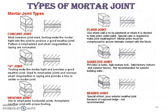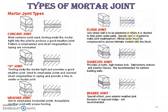Next, we go through the types of mortar joints. We have different types, starting with the concave joint, followed by the V-joint, which is used to emphasize joints and conceal small irregularities. Then we have the weather joint, the flush joint — which requires special care to make the joint weatherproof — the squeezed joint, and lastly the beaded joint.